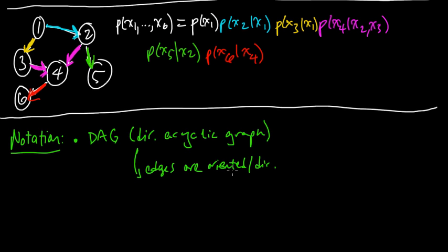we mean that the edges are oriented or directed, as the name would suggest, like these are directed edges. And acyclic means that there are no directed cycles. And this second property, so this property of having no directed cycles,